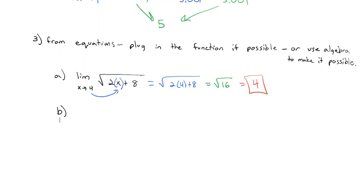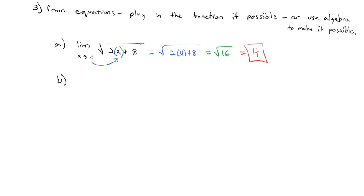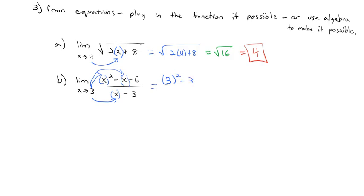The problem is it's not always as easy as just plugging in the number. Sometimes we're asked for the limit as x goes to 3 of (x²-x-6)/(x-3) — the same example from the table. If we try to plug 3 in for x, we get 3²-3-6 = 0 in the numerator and 3-3 = 0 in the denominator. We end up with 0/0, which is an indeterminate form — we can't divide 0 by 0 or anything by 0. So we need a different method.